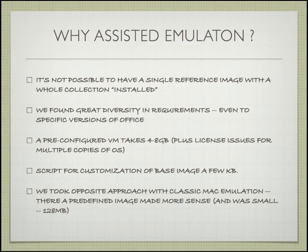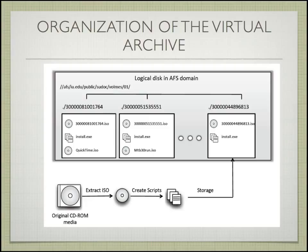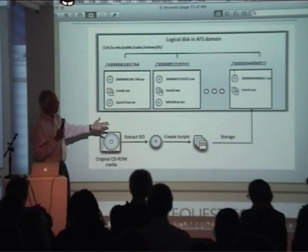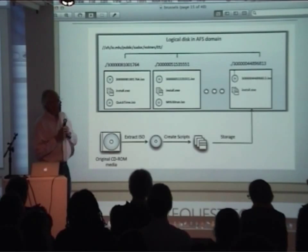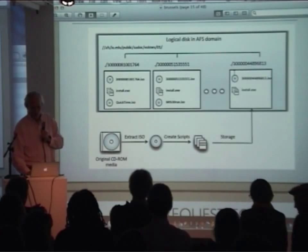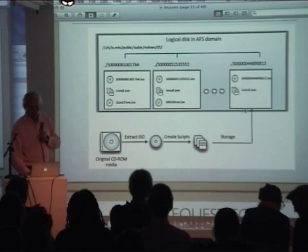It turned out the amount of material that had to be installed was modest compared to that four to eight gigabyte thing. So we organized the archive materials in a way in which we had the item we wanted to look at, the additional software we needed, and some way to do the install of this customized software environment — to bring up a unique customized execution environment at the time we wanted to run it.